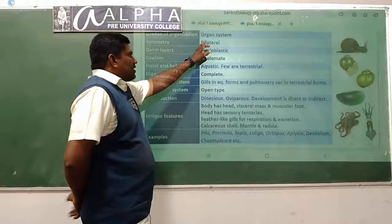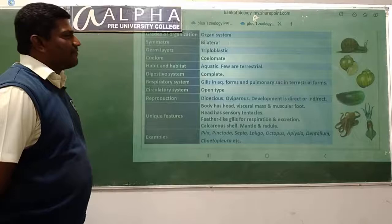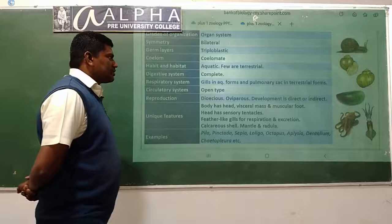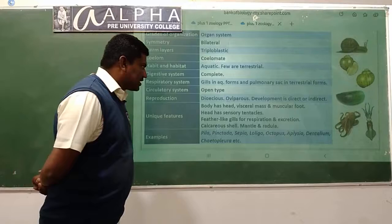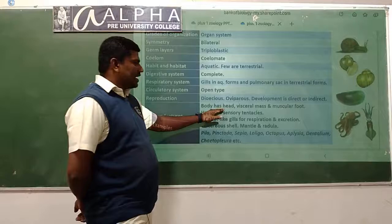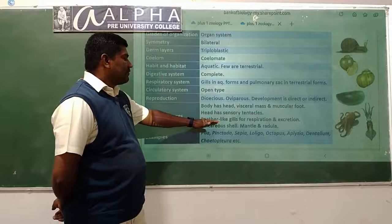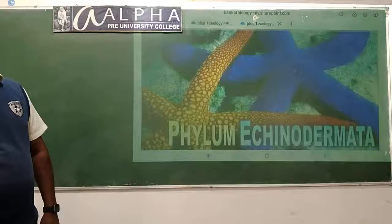Complete general characteristics: organ system level organization, bilaterally symmetrical, triploblastic, coelomate. Aquatic and very few terrestrial. Complete digestive system. Respiration by gills in aquatic and pulmonary sacs in terrestrial forms. Open type circulatory system. Reproduction by fusion of gametes, oviparous, development both direct and indirect. Unique features: body with head, visceral mass, and muscular foot; head with sensory tentacles; feather-like gills; calcareous shells; mantle; radula is present.